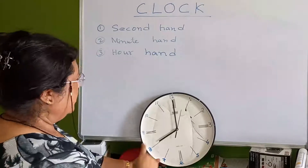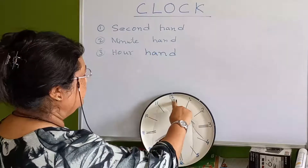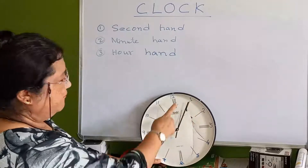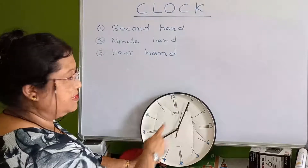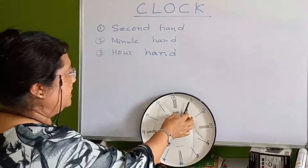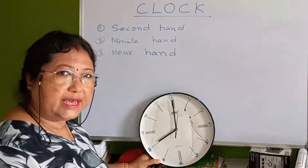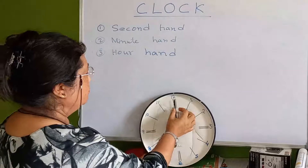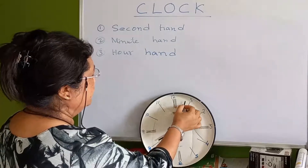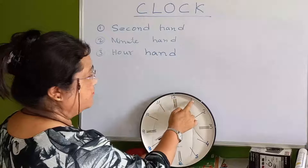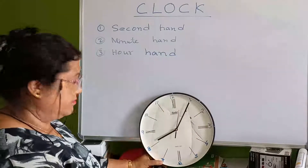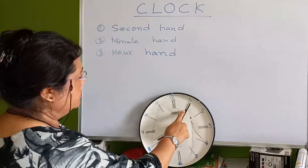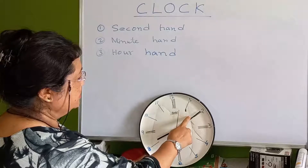When the minute hand is at 12, it is 8 o'clock. When the minute hand moves to 1, it becomes 5 minutes past — so the time is 8:05, meaning 5 minutes have gone past 8.